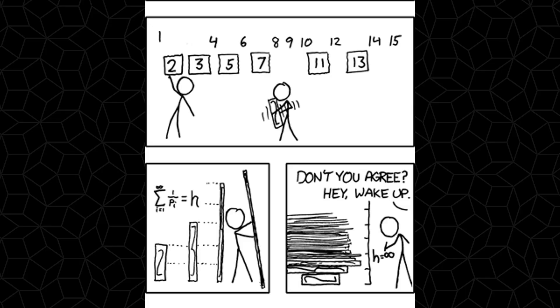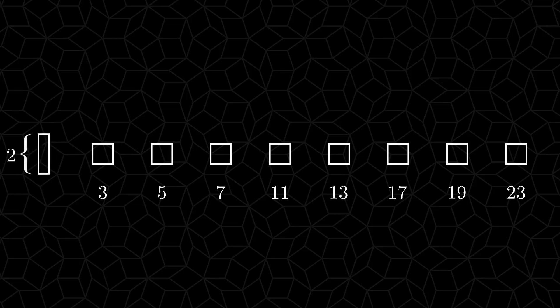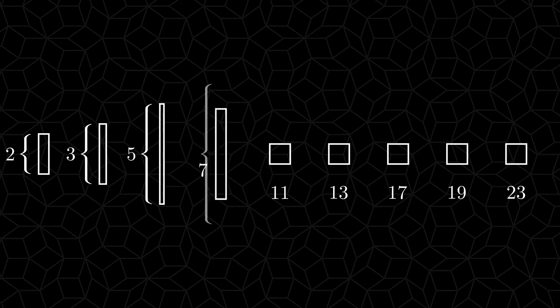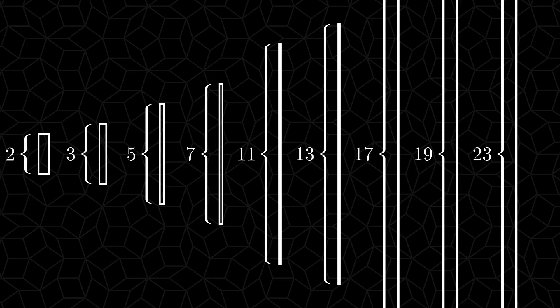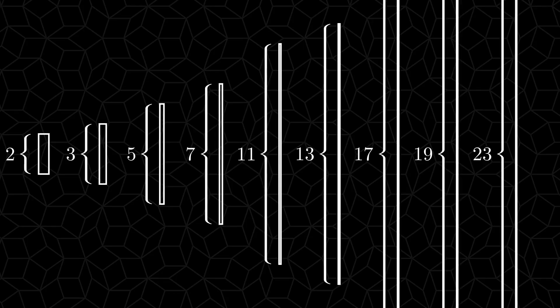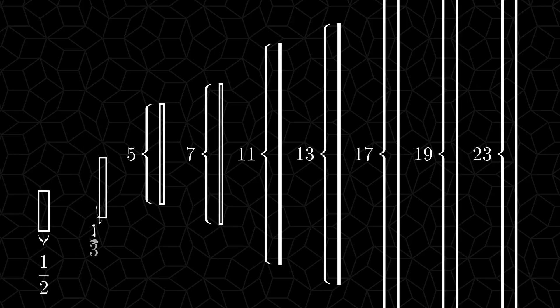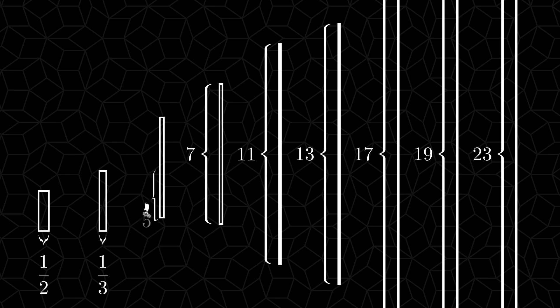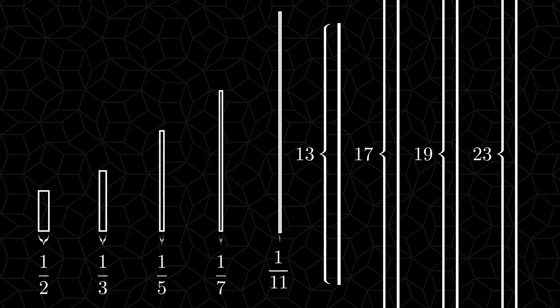What he did was he wrote down all the natural numbers, and then he wrote a square around each prime. Then he took each square and squished it so that it was as tall as the prime it represented. The box around 2 becomes 2 tall, the box around 3 becomes 3 tall, the box around 5 becomes 5 tall, and so on. This also makes the boxes narrower, so that the box around 2 became a half wide, the box around 3 becomes a third wide, the box around 5 became a fifth wide, and so on.